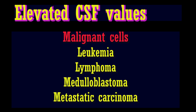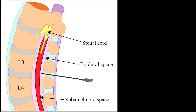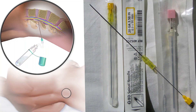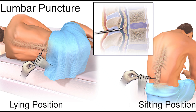Collection of CSF — lumbar puncture is carried out under sterile conditions by inserting a needle into the subarachnoid space, usually between the third and fourth lumbar vertebrae. Lab tests done in the hematology lab include assessment of appearance, color, and other parameters.